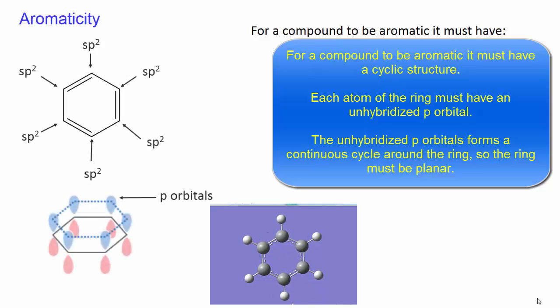Each atom of the ring must have an unhybridized p orbital. The unhybridized p orbitals form a continuous cycle around the ring, so the ring must be planar.